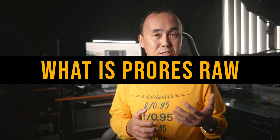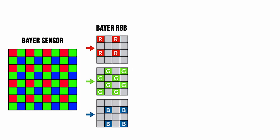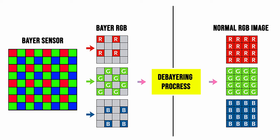Before we start, we need to understand a little more about the ProRes RAW format and how it differs from other video formats. Most cameras today have a Bayer sensor, and the output image — whether photo or video — is obtained after the debayering process, which turns the raw data from the sensor into an RGB image that computers or monitors can display. Most video formats record video after this debayering process, so each pixel has red, green, and blue sub-pixels. But ProRes RAW records the original data from the sensor before debayering.